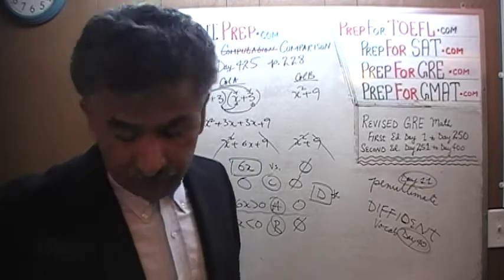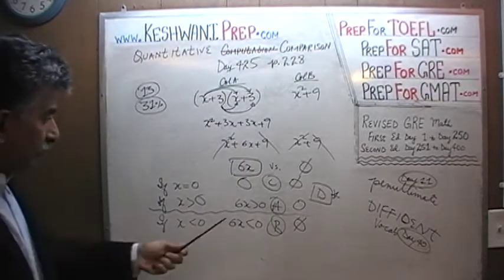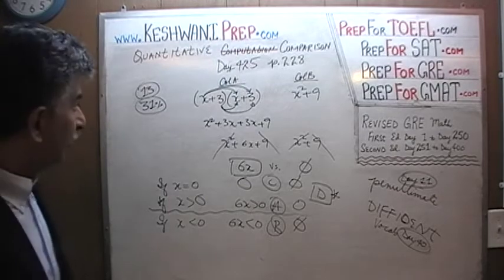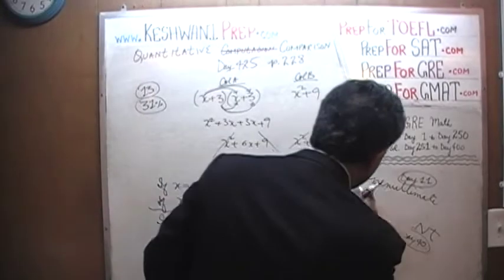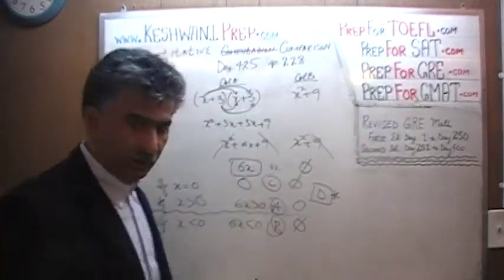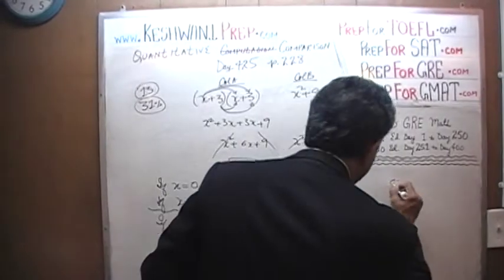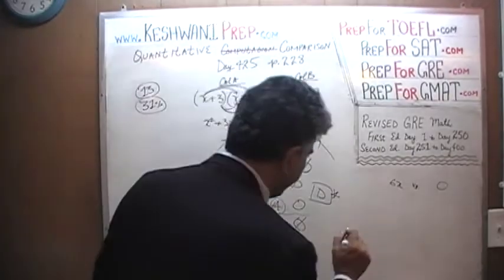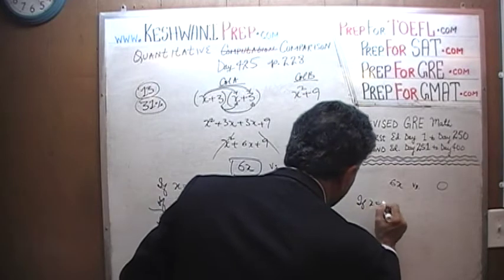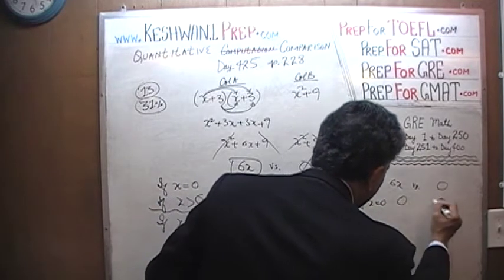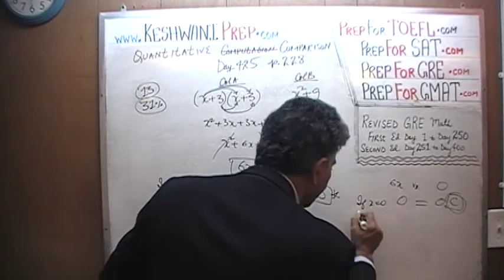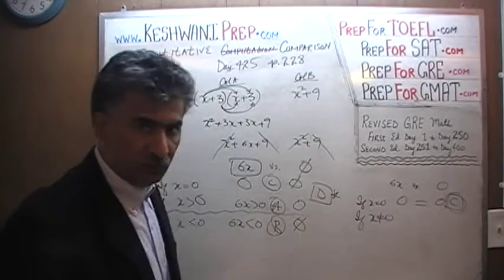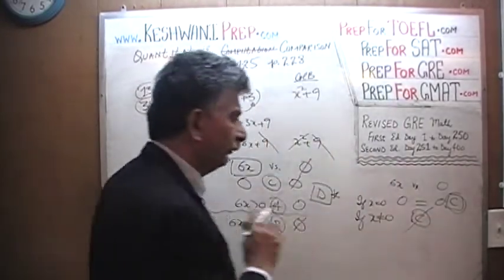I should have done it that way. Let me do it again in a more efficient way. This is how we do it in the real exam. We are comparing 6x versus 0. All we have to say is this: if x is equal to 0, then 0 equals 0 — the answer is C. If x is not equal to 0, then the answer is not C. We are done.